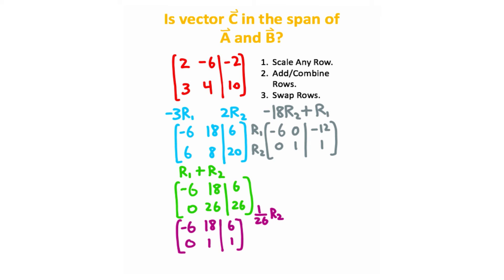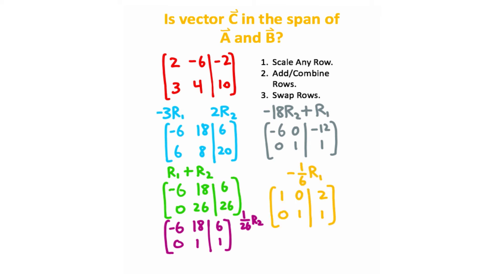So hopefully that makes sense. Now the last step I'm going to do is take row one and scale it by negative one-sixth. That is going to give me this matrix. I now have reduced row echelon form, and I have my two solutions.